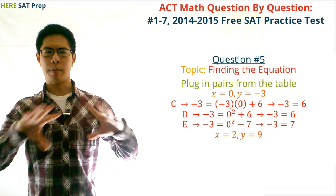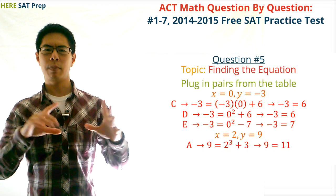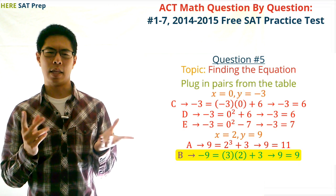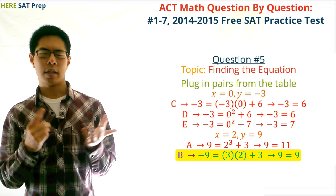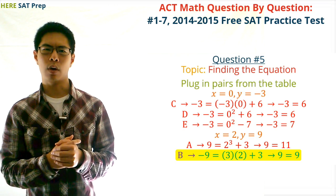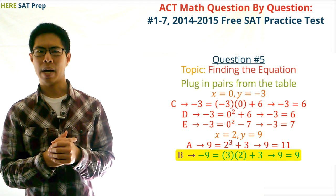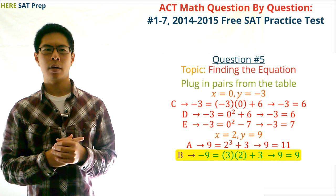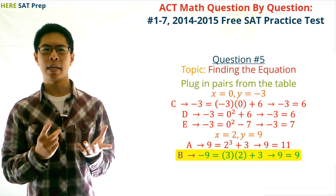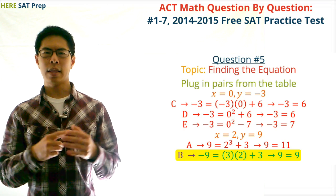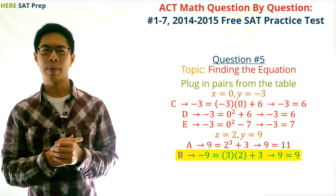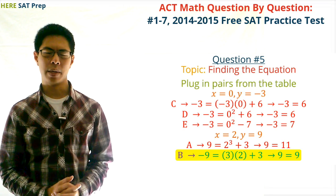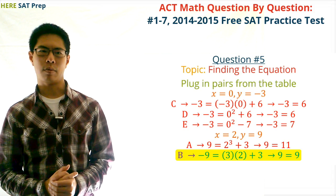Next, we'll choose another pair to plug in, preferably without a 1 in it, since 1 tends to make a lot of things true. So let's try x equals 2 and y equals 9. When we do this, we find that choice A gives 9 equals 11, which isn't right, and choice B gives 9 equals 9, which is right. So our answer is B, 3x plus 3.